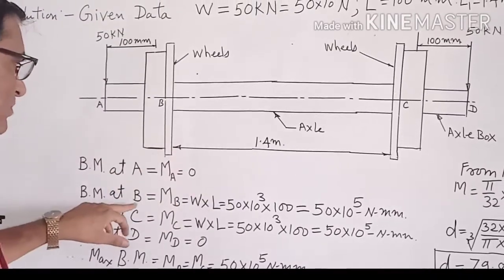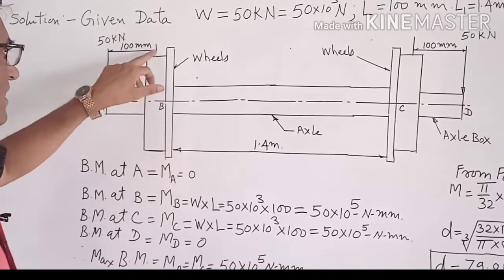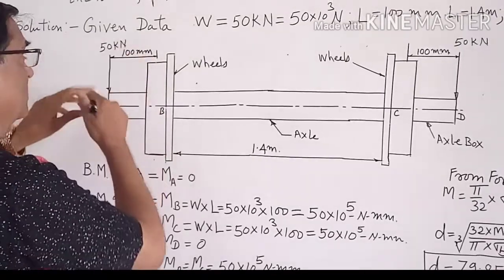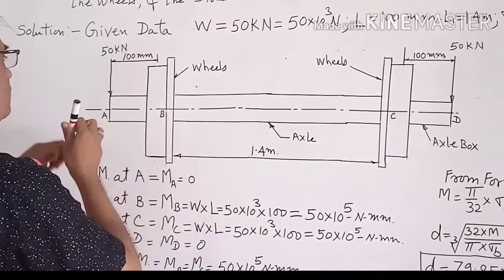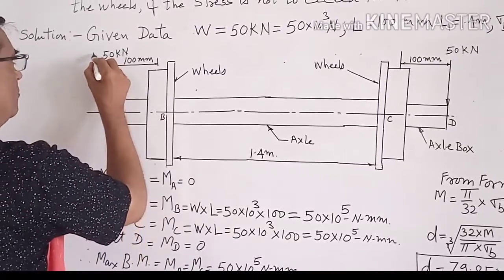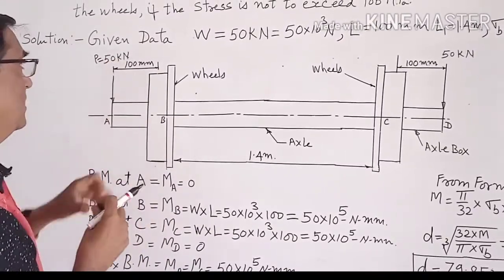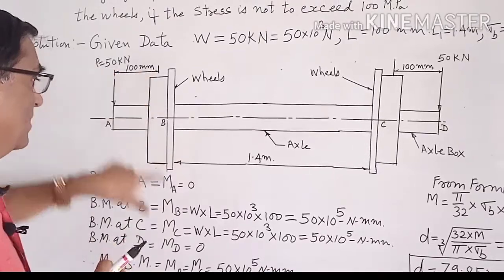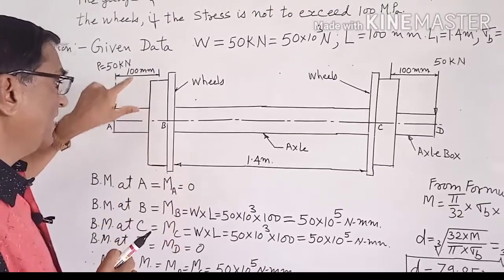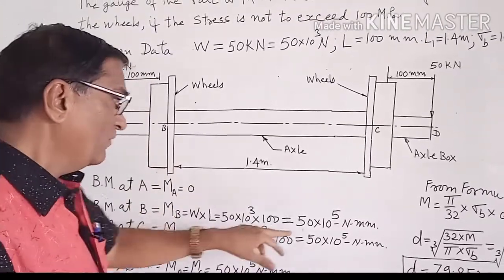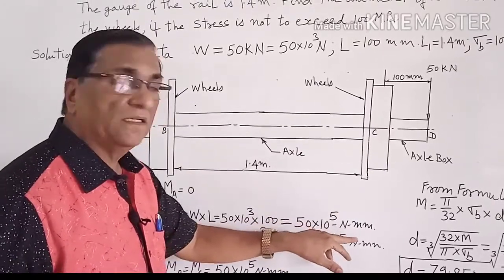At point B, at this point, the load value is P equal to 50 kN multiplied by distance L, that is 100. That comes out to be 50 into 10 raise to 5 N millimeter.